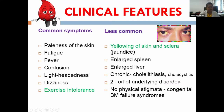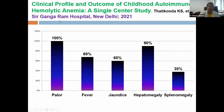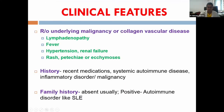If the child has a secondary disease, features of the underlying disorder will also be present. Importantly, the child should not have physical stigmata of congenital bone marrow failure syndromes. The Sir Ganga Ram Hospital study found pallor, fever, and jaundice as the most common features, with hepatomegaly more common than splenomegaly in Indian children. Atypical manifestations like lymphadenopathy, persistent fever, hypertension, renal failure, rash, or ecchymosis should prompt evaluation for underlying malignancy or collagen vascular disease.